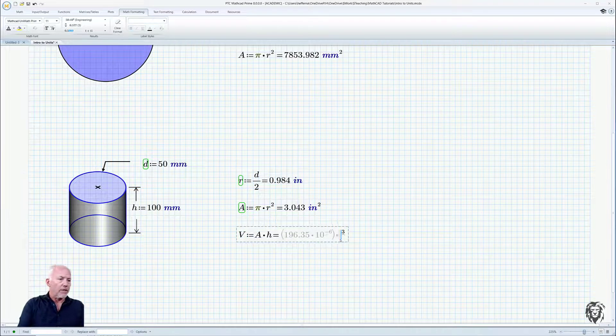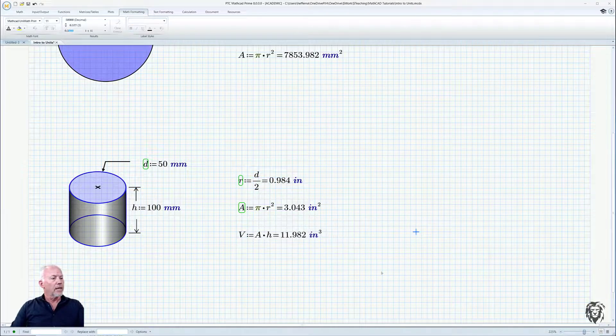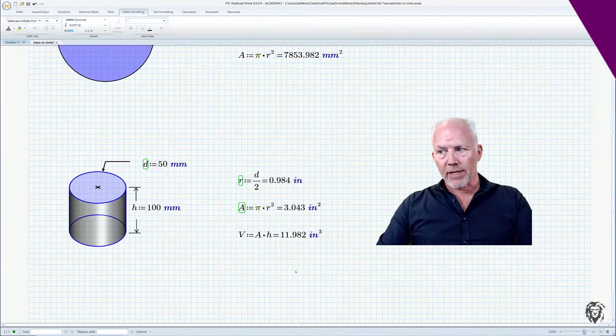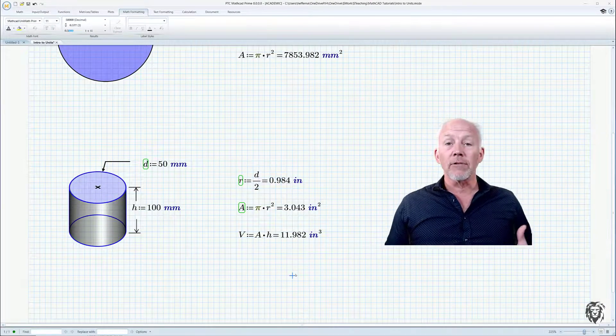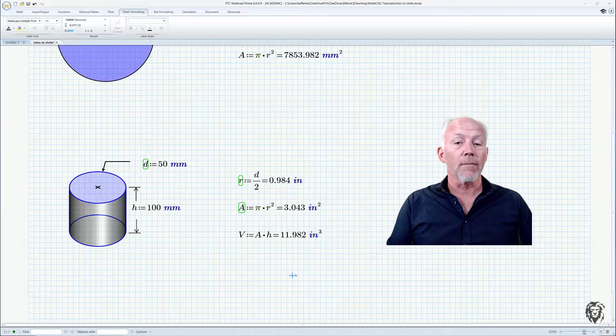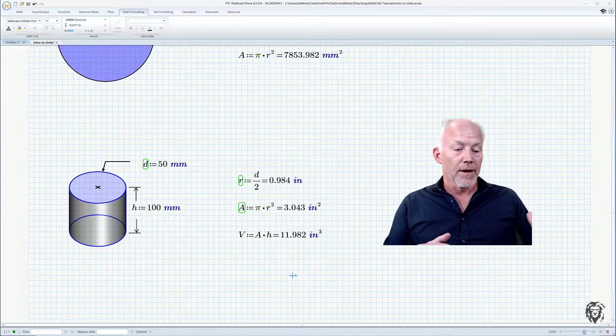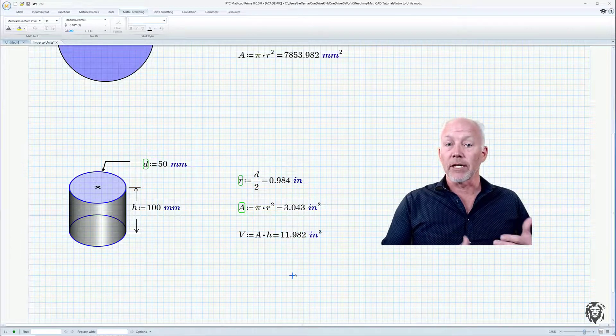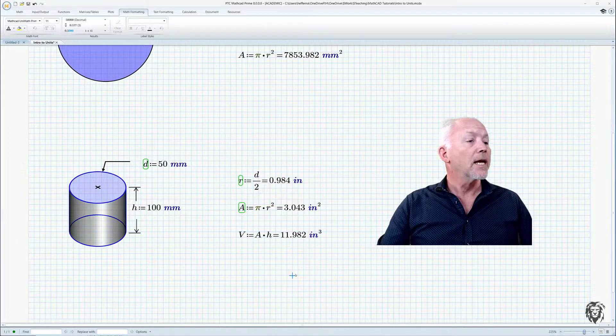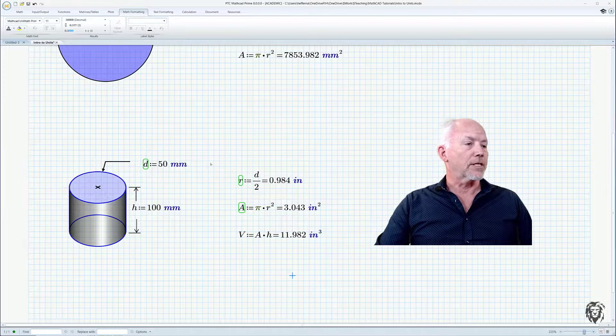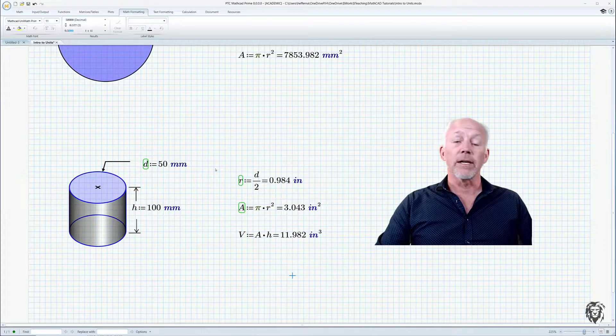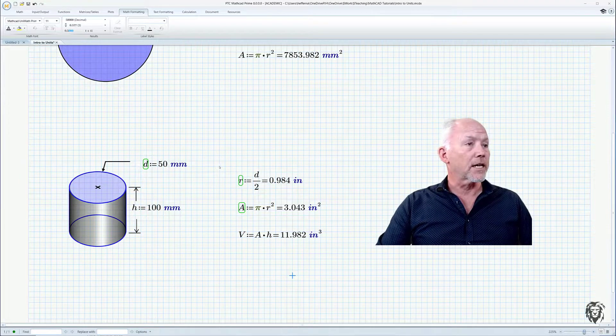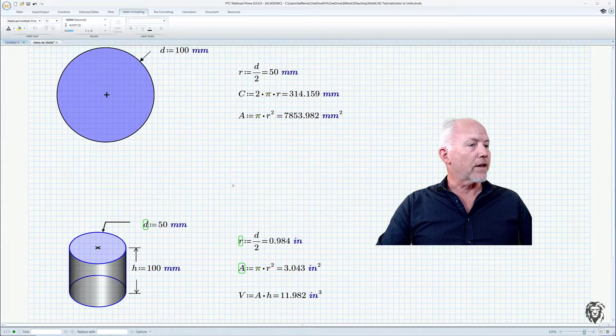And of course, we can do inches cubed, and we get 11.982. So that's doing pretty well. And so then we start to see some of the real power of units. When you get into complicated equations, making sure that your units work out often is a first check to making sure that you've done the equations correctly. And canceling out your units is always a great practice. So here we have Mathcad doing it for us and giving us a caution if we've done it wrong.